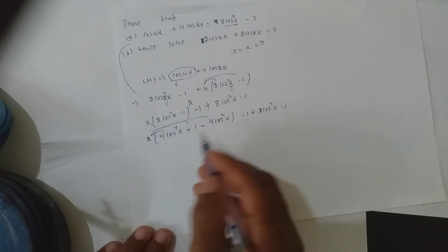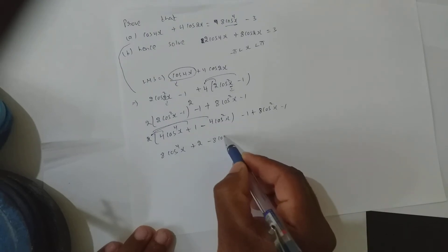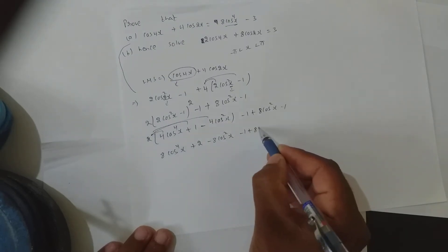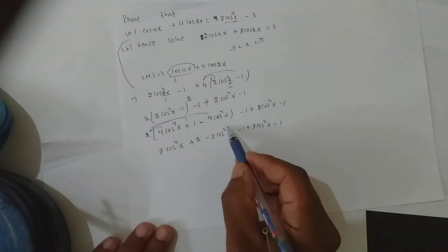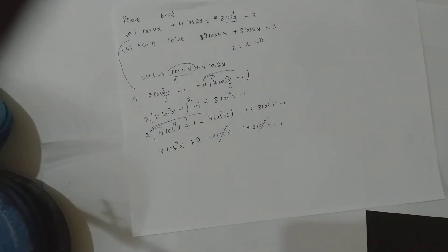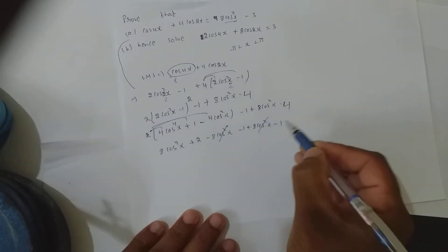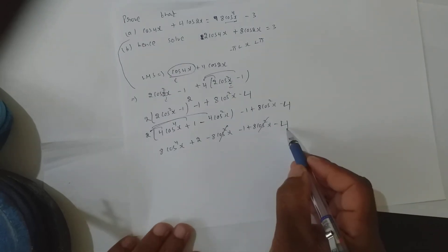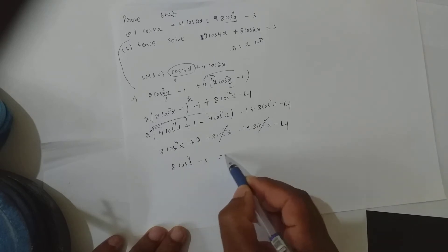Now I need to multiply. It becomes 8cos⁴x + 2 − 8cos²x − 1 + 8cos²x − 1. So what gets cancelled? 8cos²x and 8cos²x get cancelled. When I multiplied with 4, I missed: 1 × 4 = 4. So: minus 1 minus 4 is minus 5, plus 2 is minus 3. I get 8cos⁴x − 3, which is my RHS.